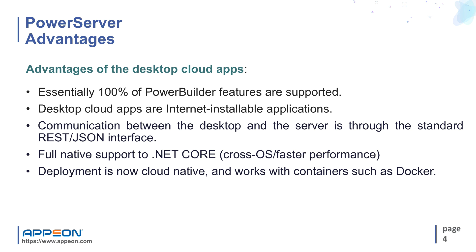Desktop cloud apps are internet installable applications. A desktop cloud app will be initially installed by accessing the app URL in a web browser. After that, the app has no dependency on a web browser type, version, or settings, but will run and update itself as needed over the internet.